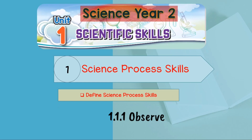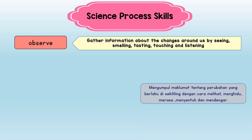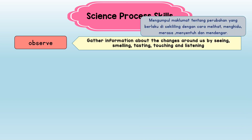The first science process skill we're going to focus on today is Observe. There are 4 science process skills. The first one is Observe, which is gathering information about the changes around us by seeing, smelling, tasting, touching, and listening.